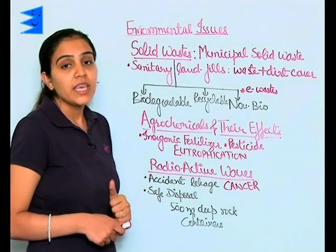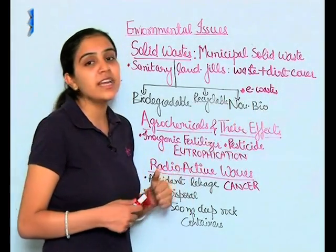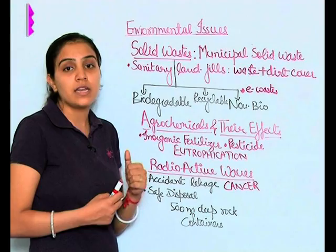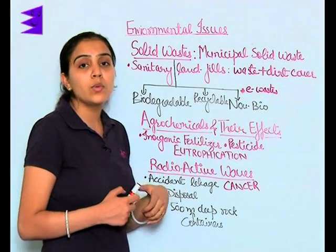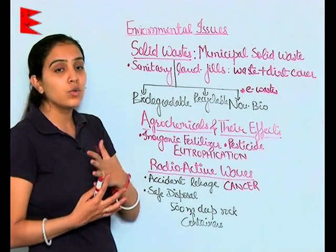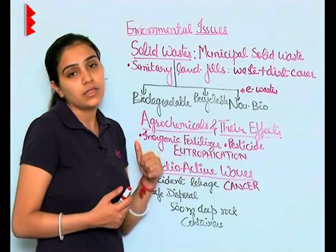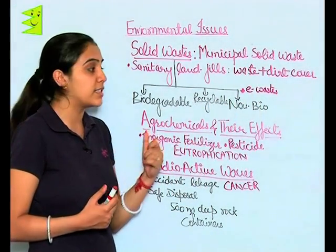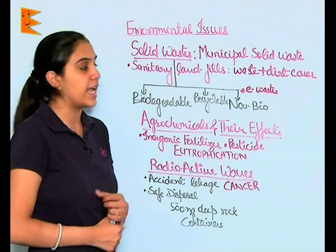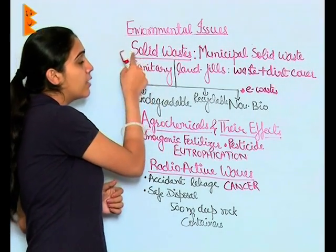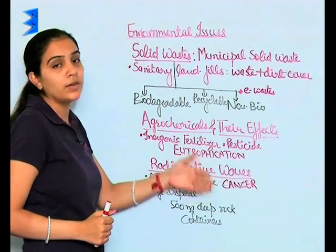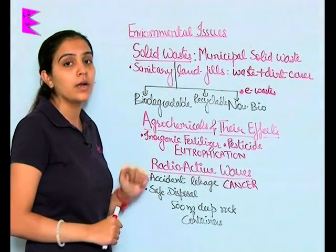E-waste is electronic waste. Usually, developed countries send their e-waste to developing countries so that it can be recycled and reused. But the manual recycling of e-waste leads to exposure of toxic substances to the person recycling it, and may lead to certain deleterious and hazardous impacts. The only method to overcome e-waste is recycling. These — solid waste, agrochemicals and their effects, and radioactive waves — are all pollutants, and we have discussed ways to overcome them.